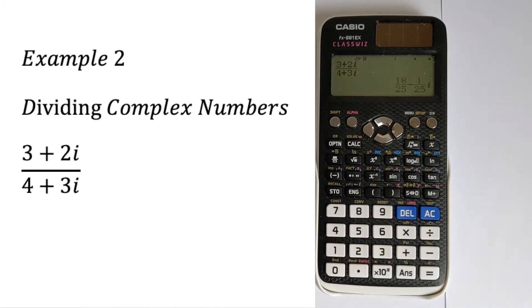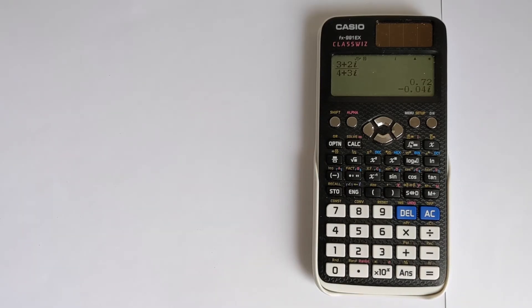and just press equals, and it will do the calculation for you. It will present it in terms of a fraction automatically. If you press the S to D button, you can get it in decimal form as well. So that's the simple operations.